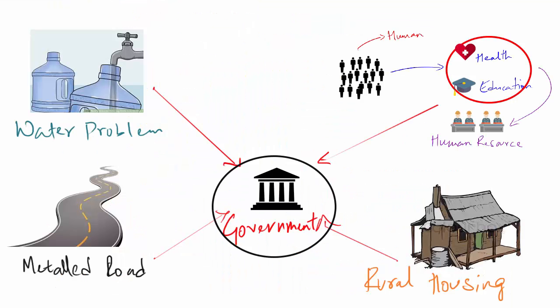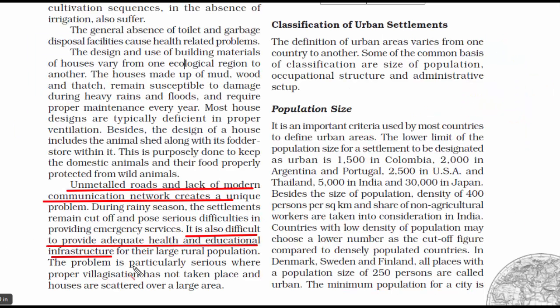The fourth problem is inadequate health and educational infrastructure. Health and education are the most basic facilities required to turn humans into human resources. Without education, knowledge and skills cannot be imparted, and without proper health facilities, people cannot contribute towards the economy. Governments and policymakers must constantly look for ways to tackle these issues as rural settlements are growing rapidly.